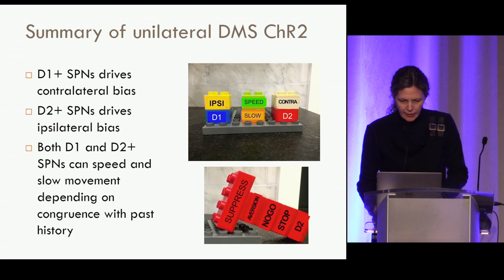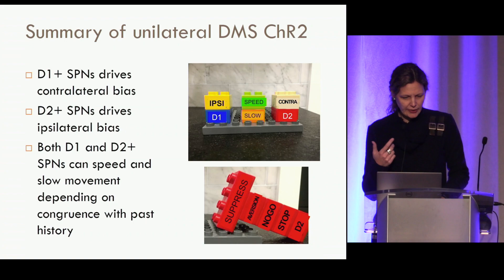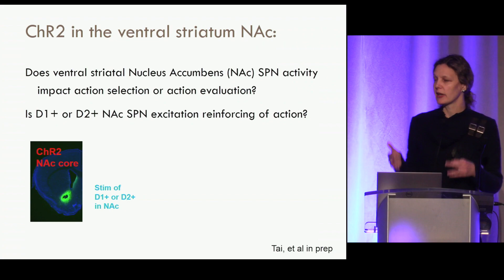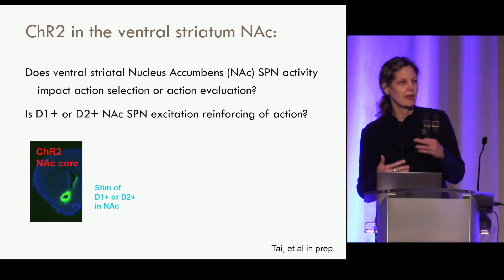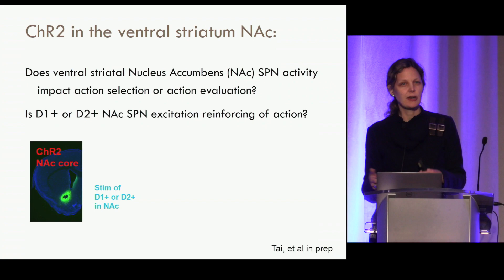To summarize the dorsal medial striatum experiments: D1 SPNs can drive a contralateral bias while D2-expressing SPNs can drive an ipsilateral bias, and both D1 and D2 SPNs can speed and slow movement depending on congruence with past history. Now let's move to the ventral striatum, stimulating D1 and D2-expressing spiny projection neurons there. In the ventral striatum, we don't call these the indirect pathway — they make different projections to the ventral pallidum and VTA. D1 is thought to favor the VTA and D2 the ventral pallidum, with more overlap.